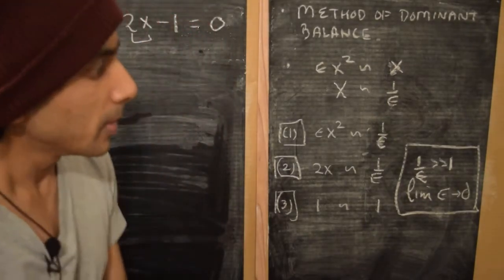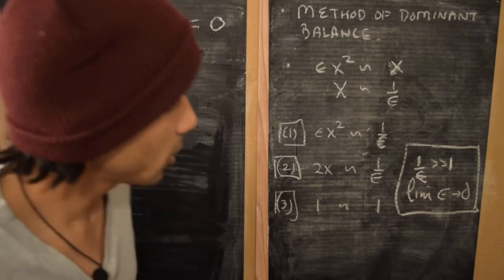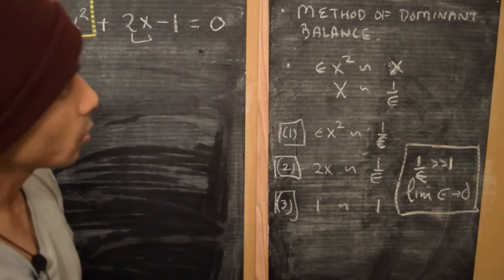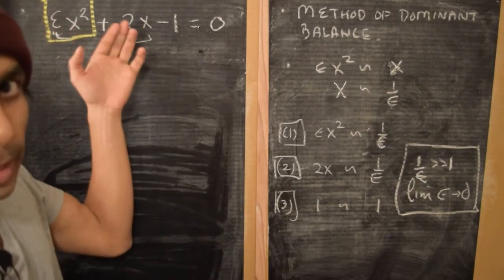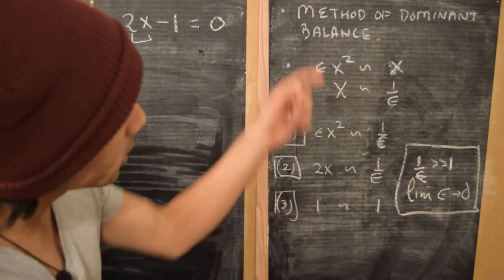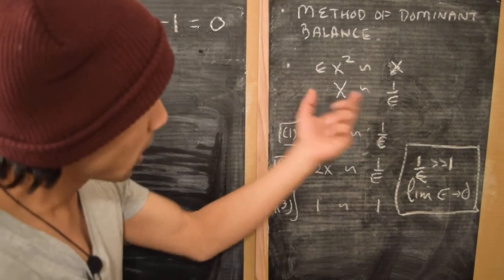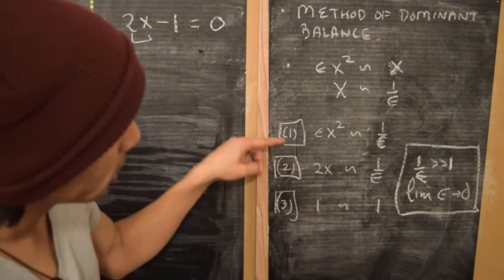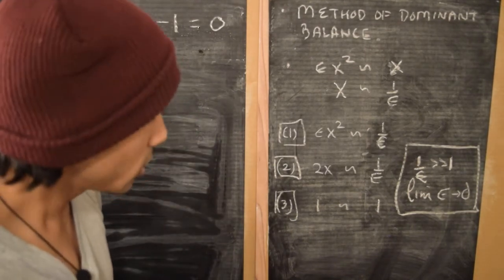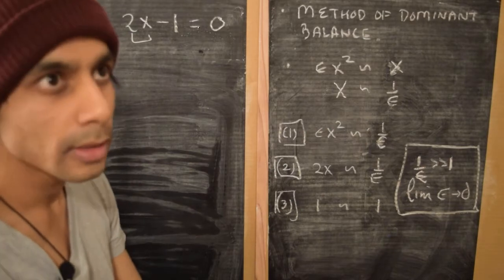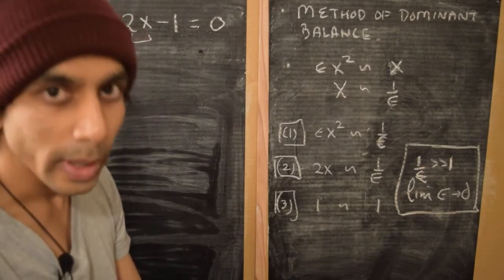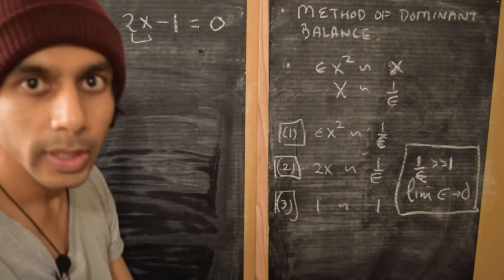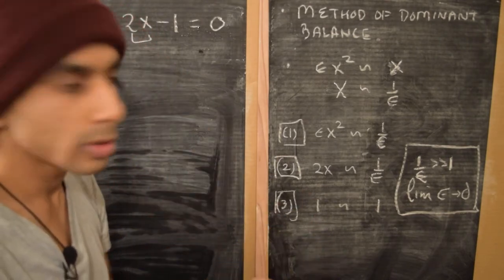Welcome back. In the previous part, we were talking about how, by using the method of dominant balance for the quadratic equation εx² + 2x - 1, where ε multiplies the highest degree term x², we find that the appropriate scaling relation is that x scales as 1/ε. That will give us the pair of dominant terms. We can define a new variable y of order 1 and cast this equation in terms of y, then solve it using regular perturbation methods.